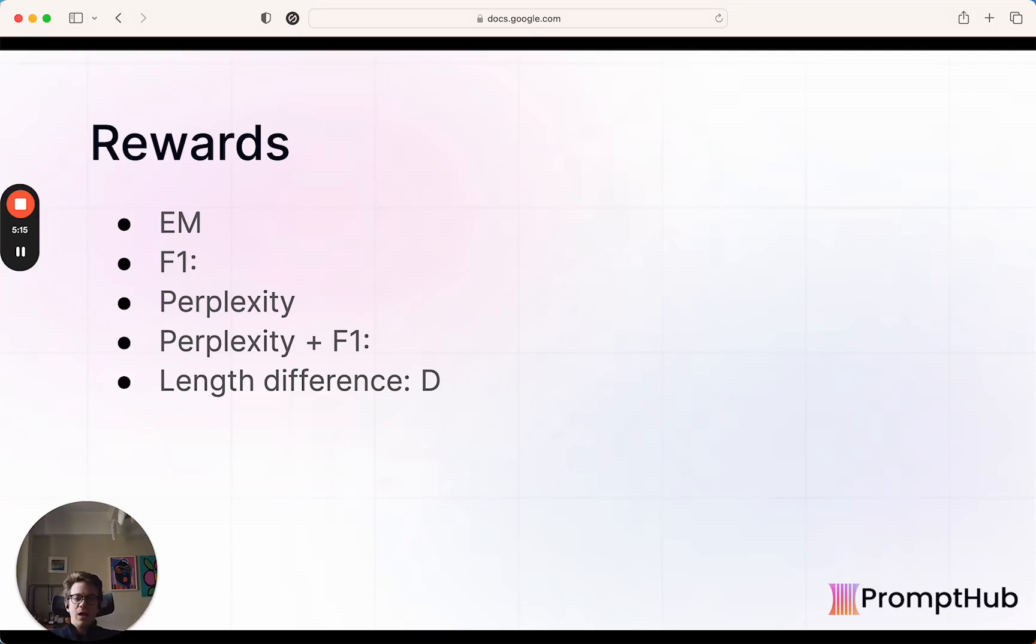So we've been talking about rewards a lot. In this paper, they looked through five different ones and what these look like are EM, which is just exact match. So this is in a case where you're doing like maybe classifying data and you know that the answer should be X, Y, or Z. You're looking for an exact match. F1 or F1 score combines precision and recall. So how often the model gets it correct out of how many times there are actually correct responses.